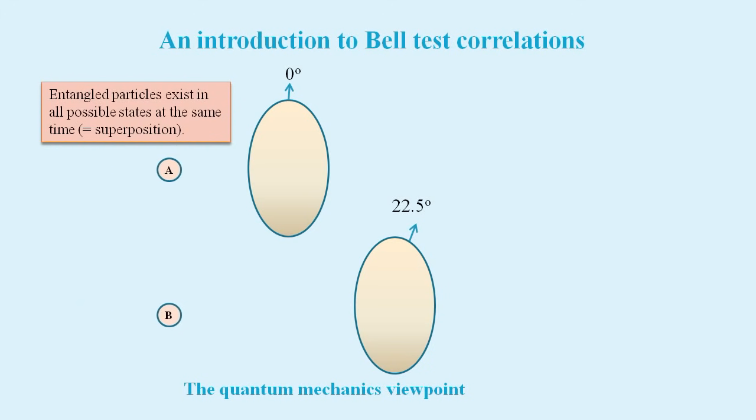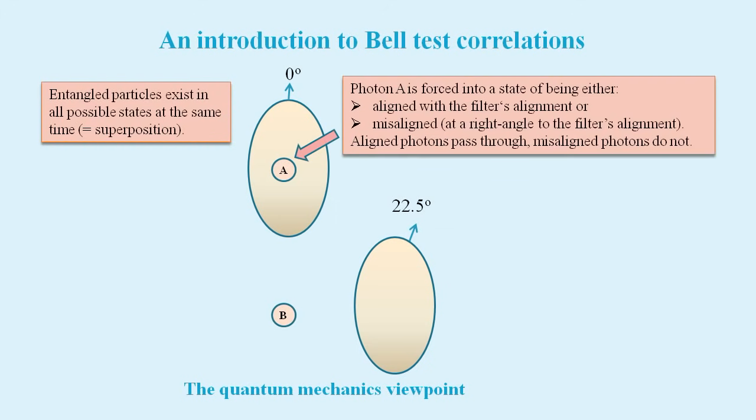The photons approach their respective filters and one will reach its filter first. At this point, the photon either takes on the same alignment as the filter or it takes on an alignment perpendicular to the filter alignment. Either way, the state of the superposition ends. Only the photons that assume the same alignment as the filter will pass through it.